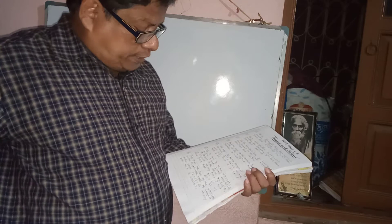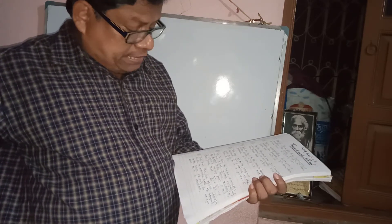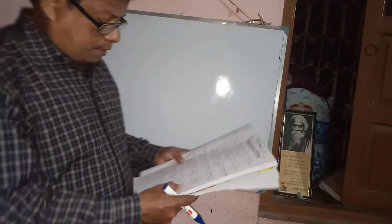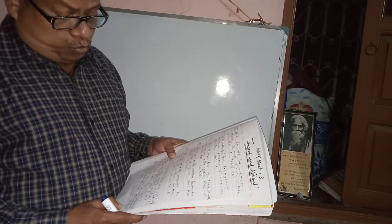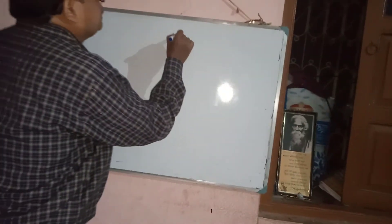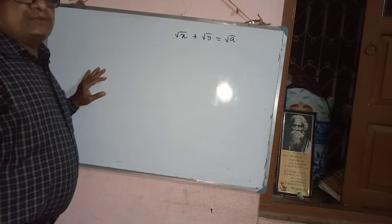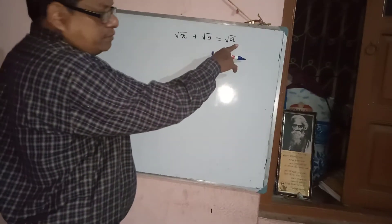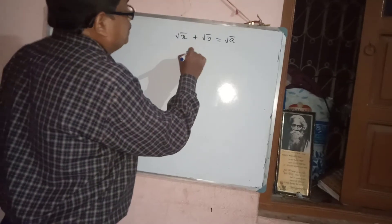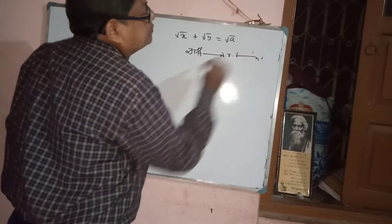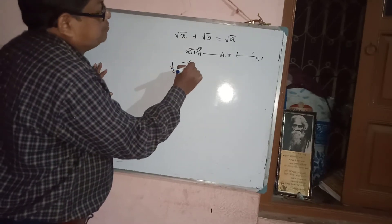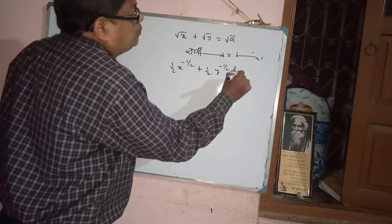Next problem: prove that the sum of the intercepts on the coordinate axes of the tangent to the curve √x + √y = √a at any point on it is constant. Given √x + √y = √a, differentiate both sides with respect to x: (1/2)x^(-1/2) + (1/2)y^(-1/2) · dy/dx = 0. So dy/dx = -y^(1/2) / x^(1/2).